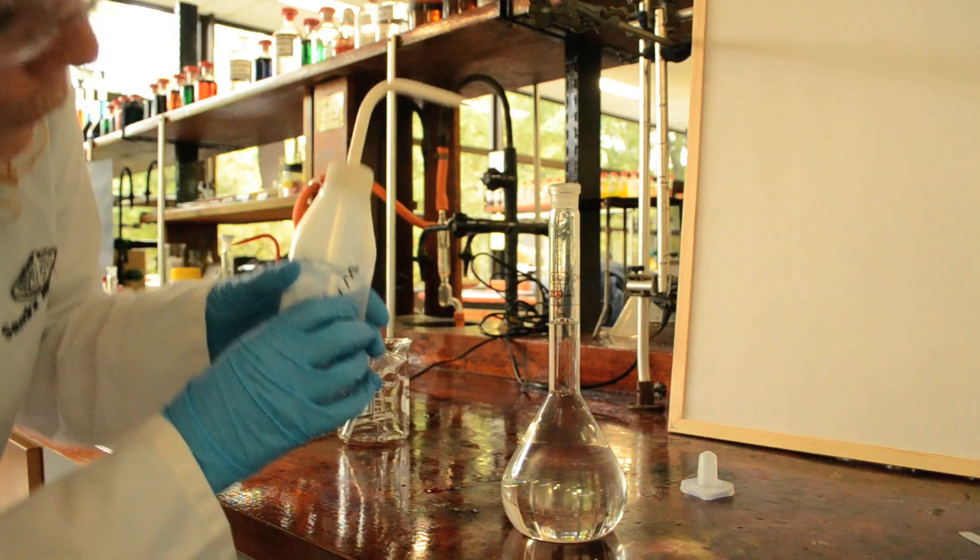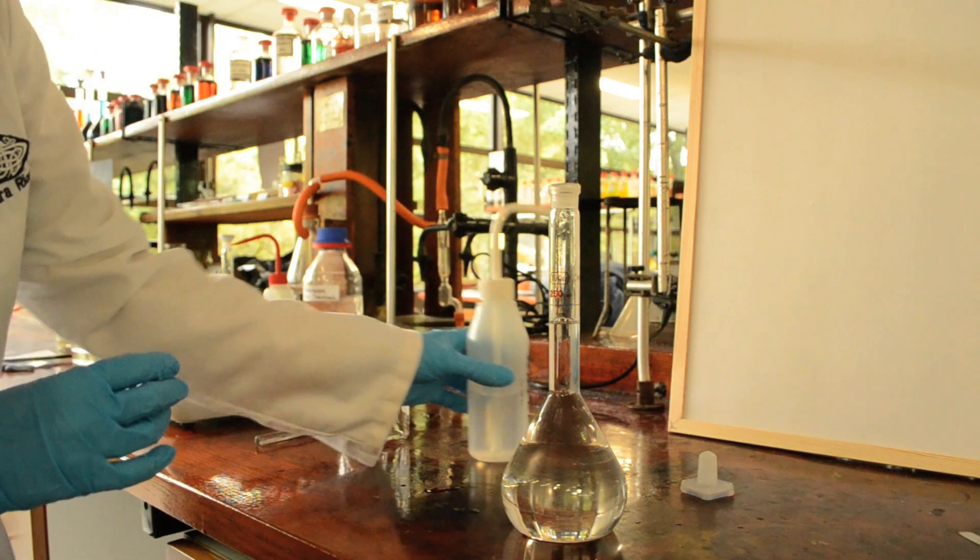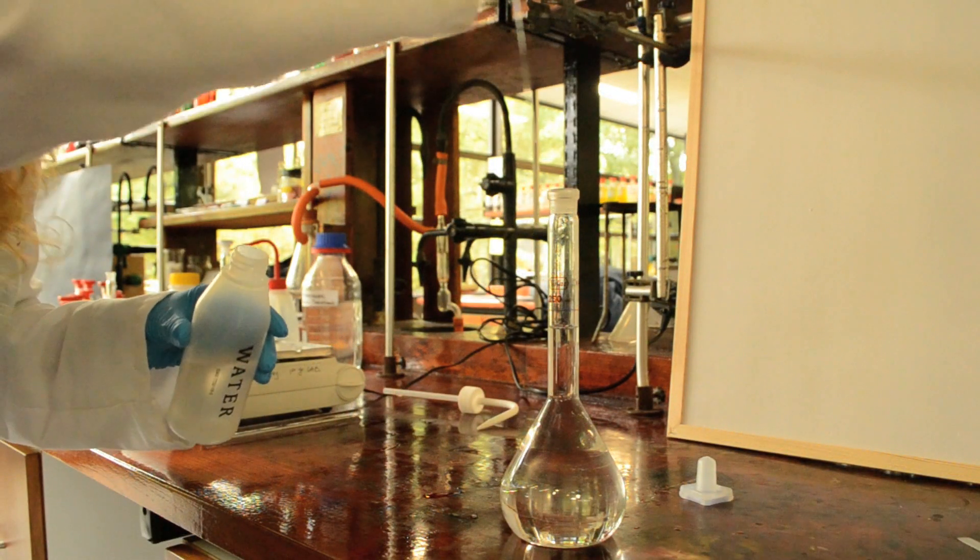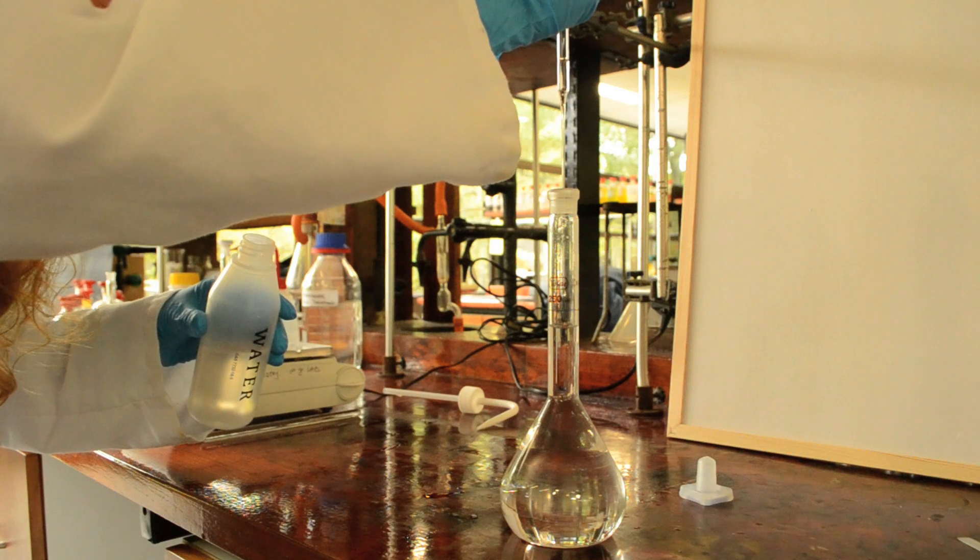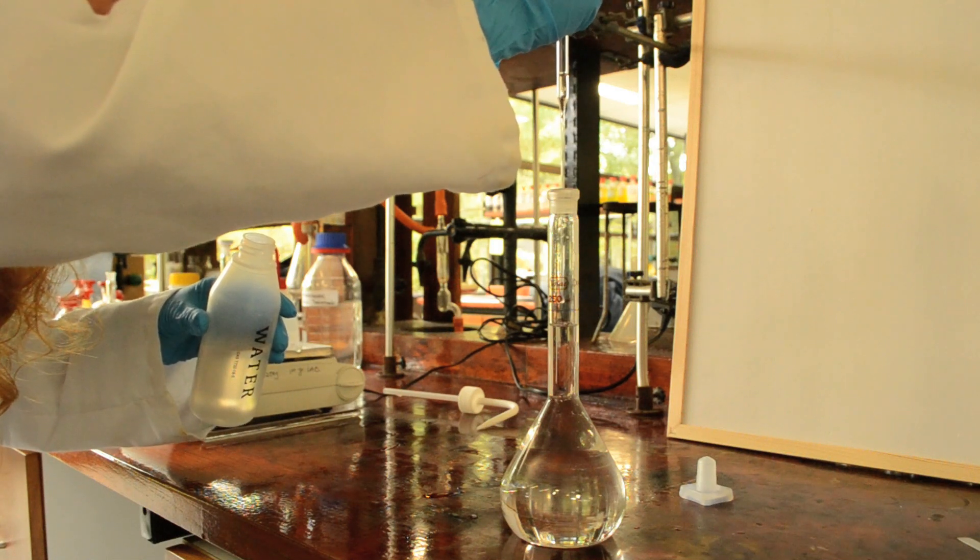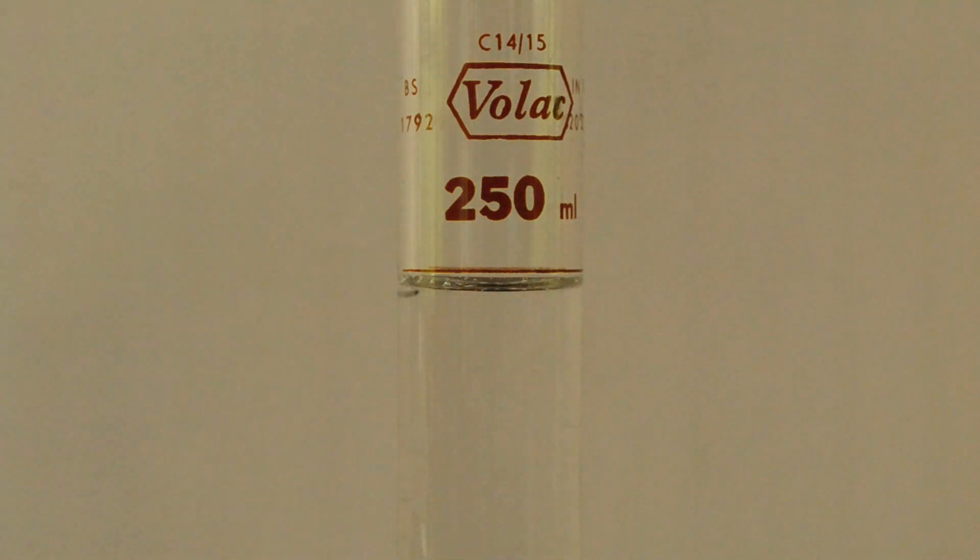So once I get to within 1 cm of the graduated mark, I stop. I carefully bring the bottom of the meniscus up to the graduation mark, adding dropwise, and making sure my eyes are level with the graduation mark.